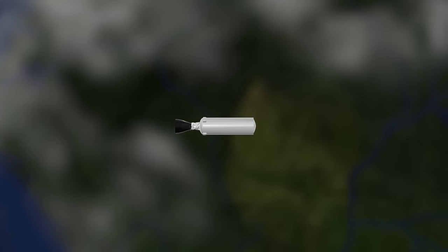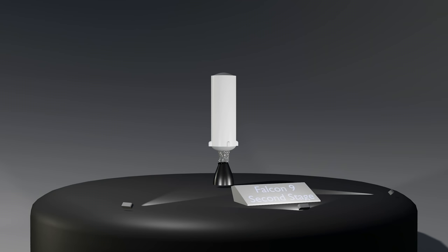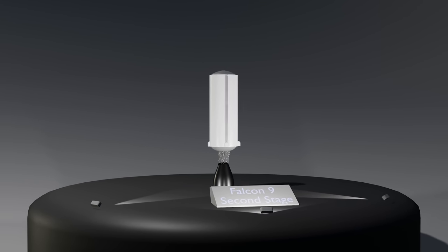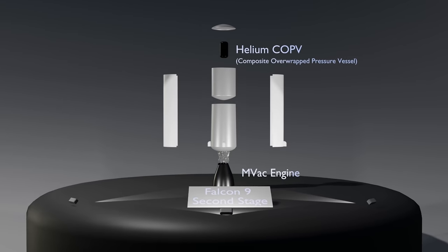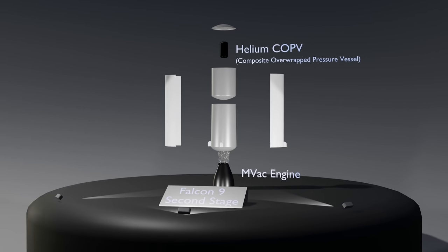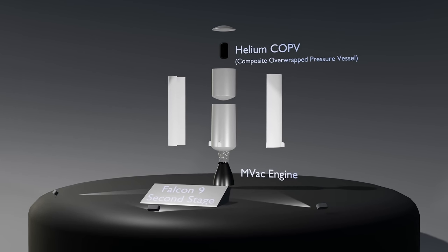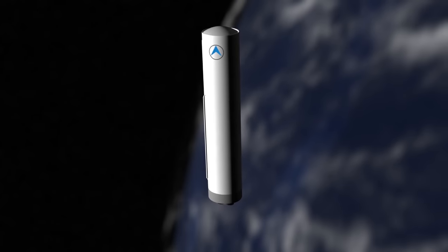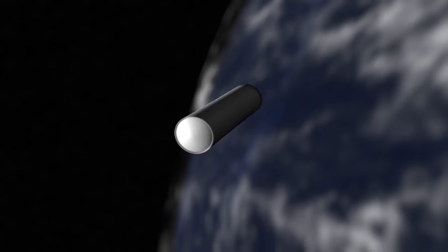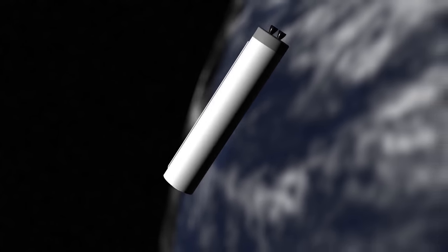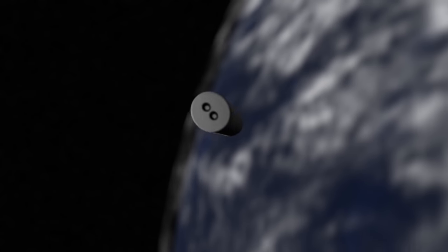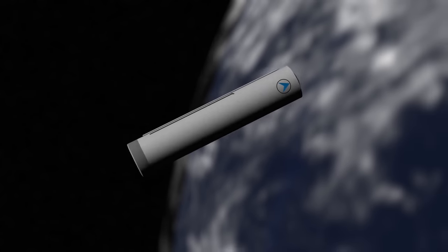These contributing factors make it very difficult to predict the exact point of reentry. This therefore poses a threat to Earthlings as some parts of the spacecraft, like the composite pressure vessels and engines, are known to not burn up completely through reentry heating. Much like China's Long March 5B's rocket that posed a threat to populated areas as it tumbled around in an unpredictable decaying orbit before raining down debris near the Maldives.